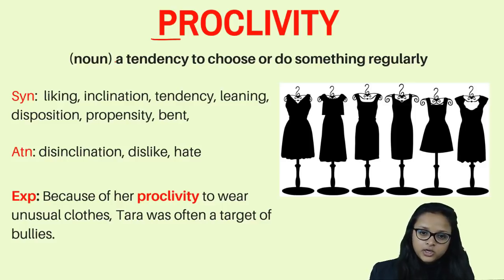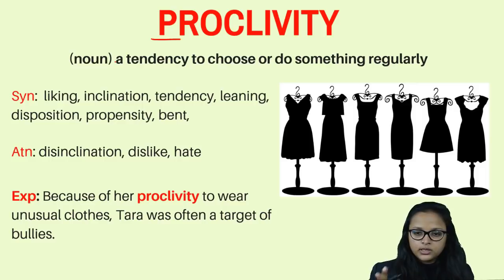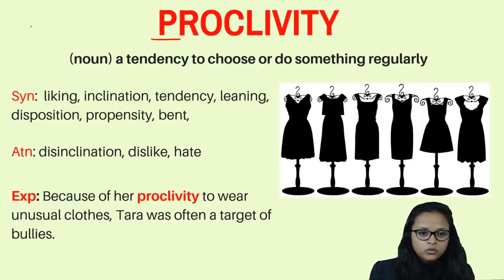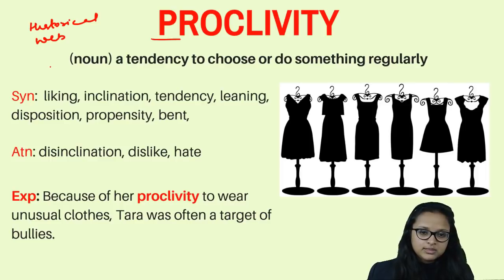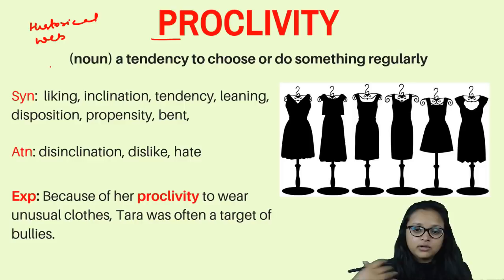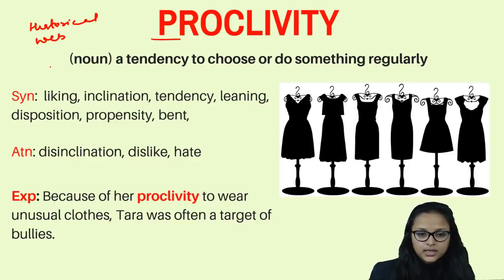Some people have a tendency to wear pink, some like to wear blue — that is according to their inclination towards a particular thing. Like if I like to watch historical web series, I'll watch various historical ones; if I like romantic web series, I'll keep watching those. That is proclivity: doing something again and again because you like to do it.